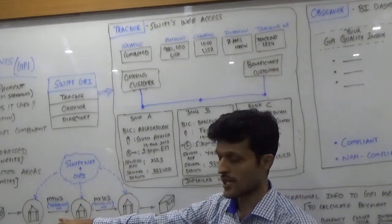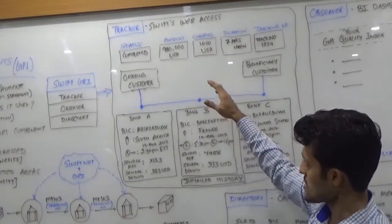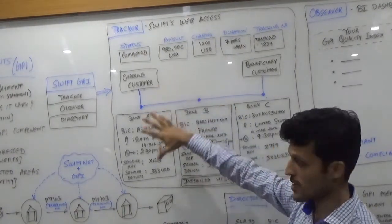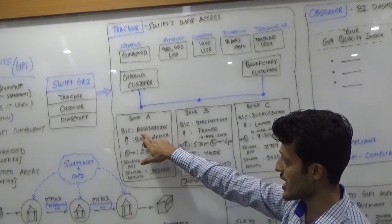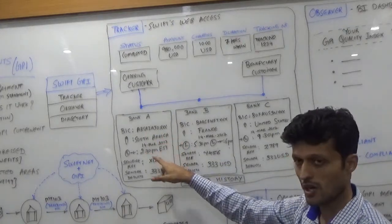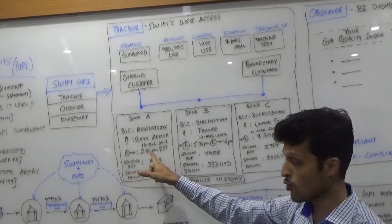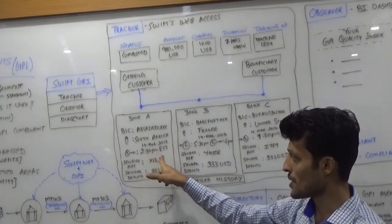Now this is the ordering customer where bank A, which is residing in South Africa, so bank A being the EPSO bank which is in South Africa, Joburg. It has initiated on 14th March at 2:30 PM EST.